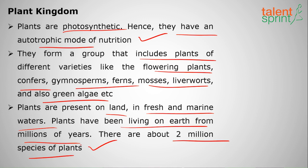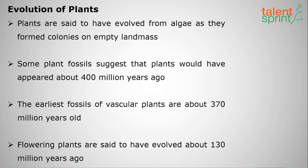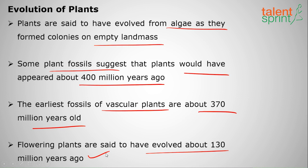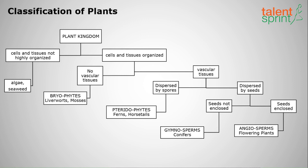Plants are said to have evolved from algae, which colonized empty land masses. Some plant fossils suggest plants appeared around 400 million years ago. The earliest fossils of vascular plants are about 370 million years old, and flowering plants are said to have taken origin around 130 million years ago.